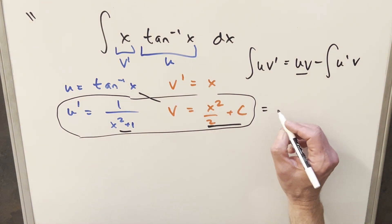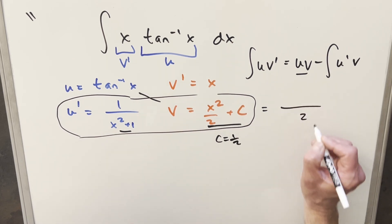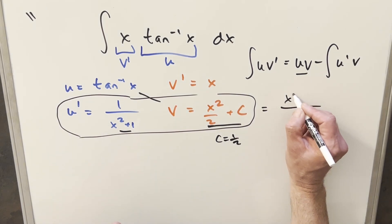So what I want to do here is actually choose a c that's going to make this work nice. What I can actually do to rewrite this, I can choose my c. If I choose c equal to 1 half, then by doing that, we have got a common denominator here, so I can write this all over 2, and then the numerator, we just get x squared plus 1.